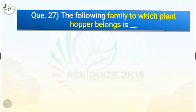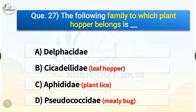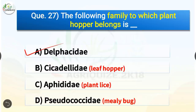Question number 27. The family to which plant hopper belongs is which? The options are Delphacidae, Cicadellidae, Aphididae, or Pseudococcidae. The correct answer is option A, Delphacidae. Plant hopper belongs to Delphacidae, whereas leaf hopper belongs to Cicadellidae, plant lice belongs to Aphididae, and mealybug belongs to Pseudococcidae.